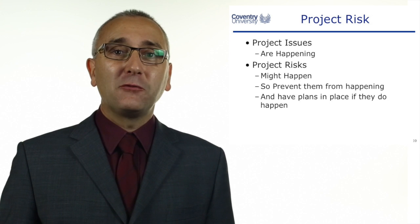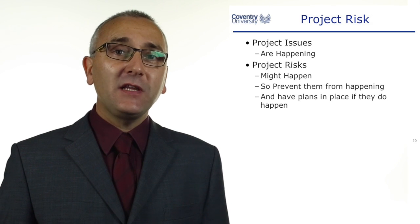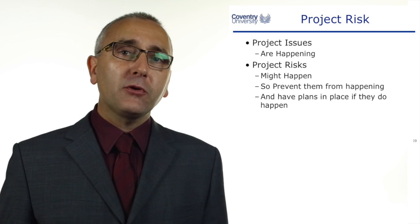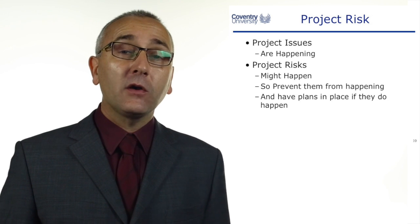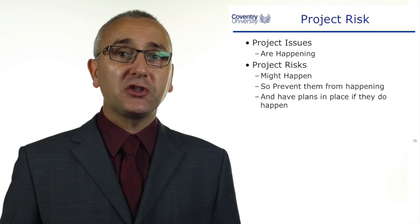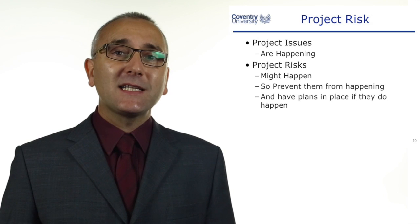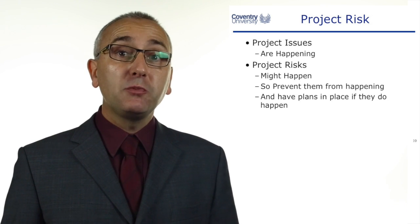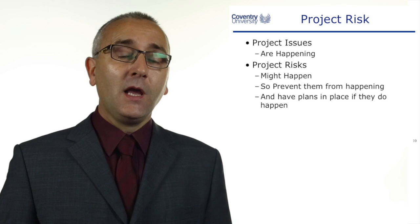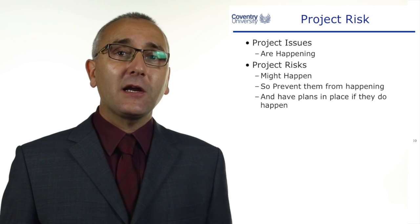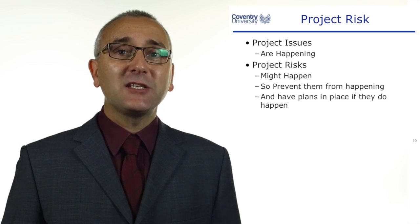Finally, I just want to separate issues from risks. A project issue is currently happening and you need to deal with it — something has happened and it has been raised as an issue. A project manager often has an issue log, a list of issues that are ongoing and they're working on, and you would discuss current issues at a project meeting. A project risk is something that might happen, and our task is to be a proactive project manager — to prevent that from happening and have plans in place to mitigate it if it does happen. So this was the introduction to project risk; we're now going to look at a case study and then look at ways of identifying, assessing, and managing risks.